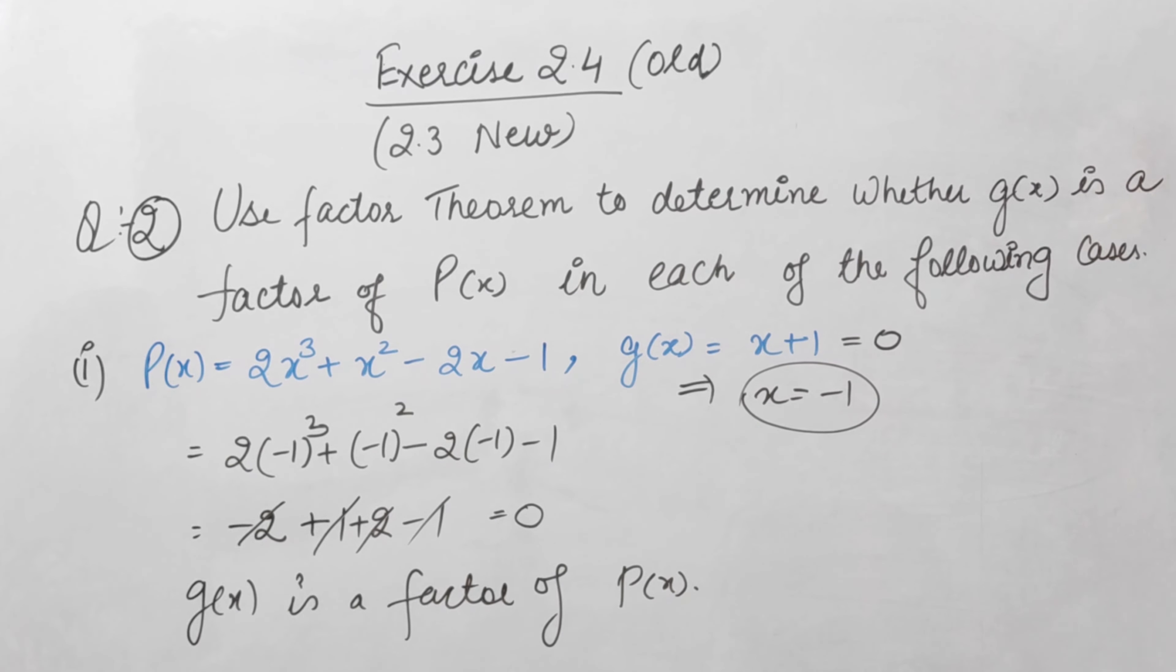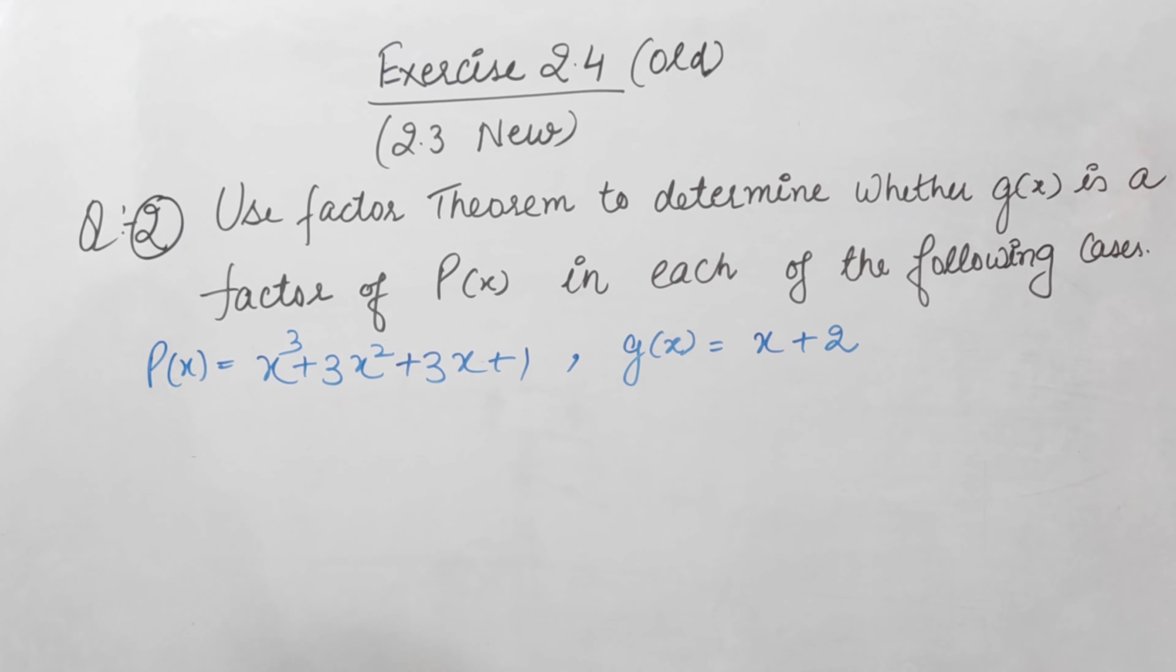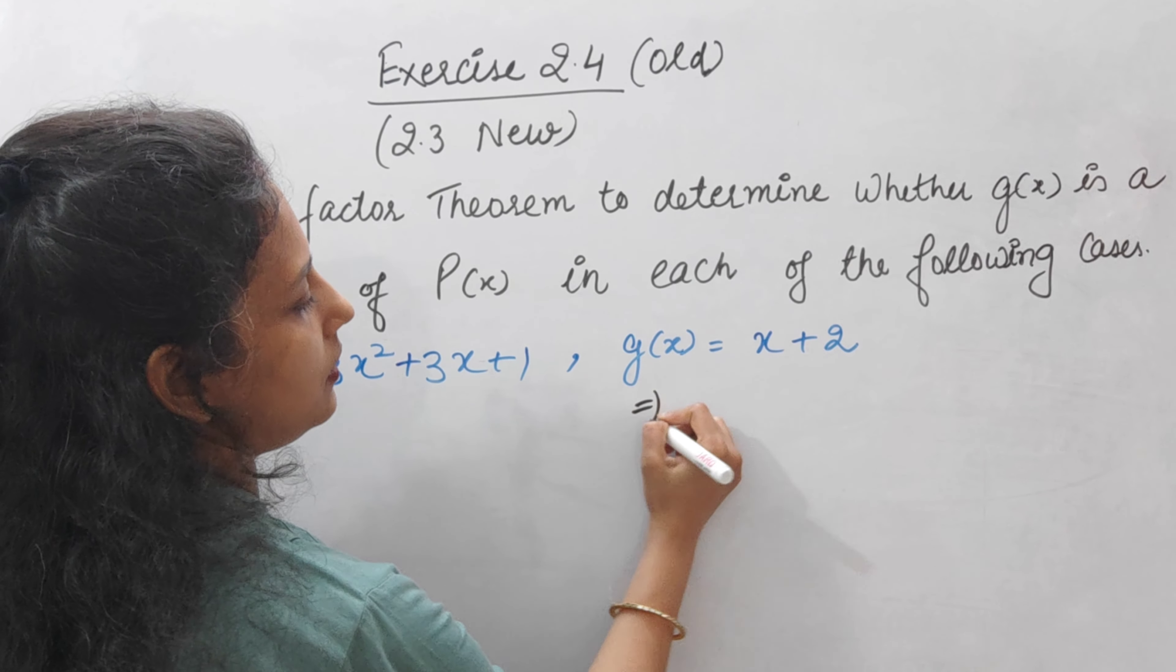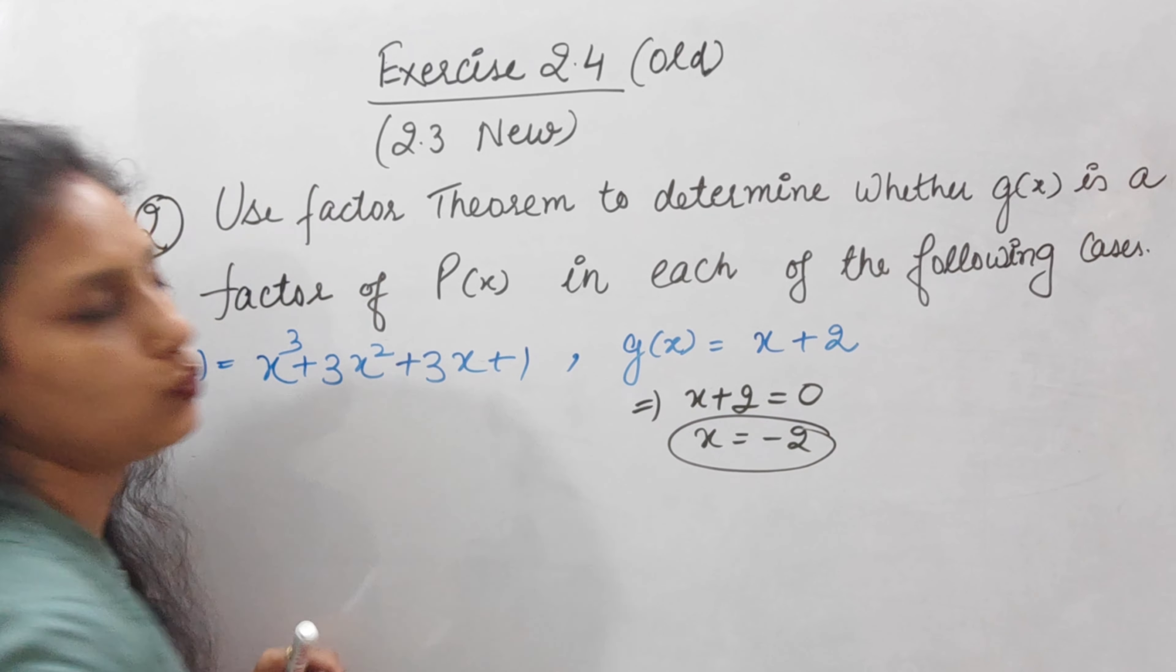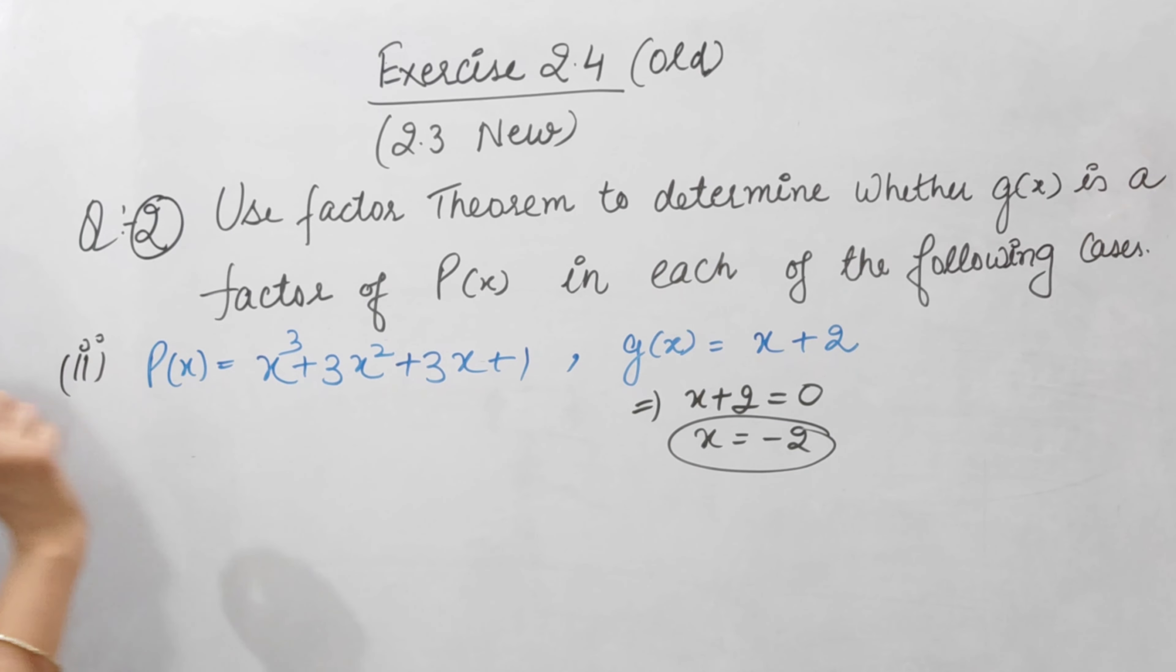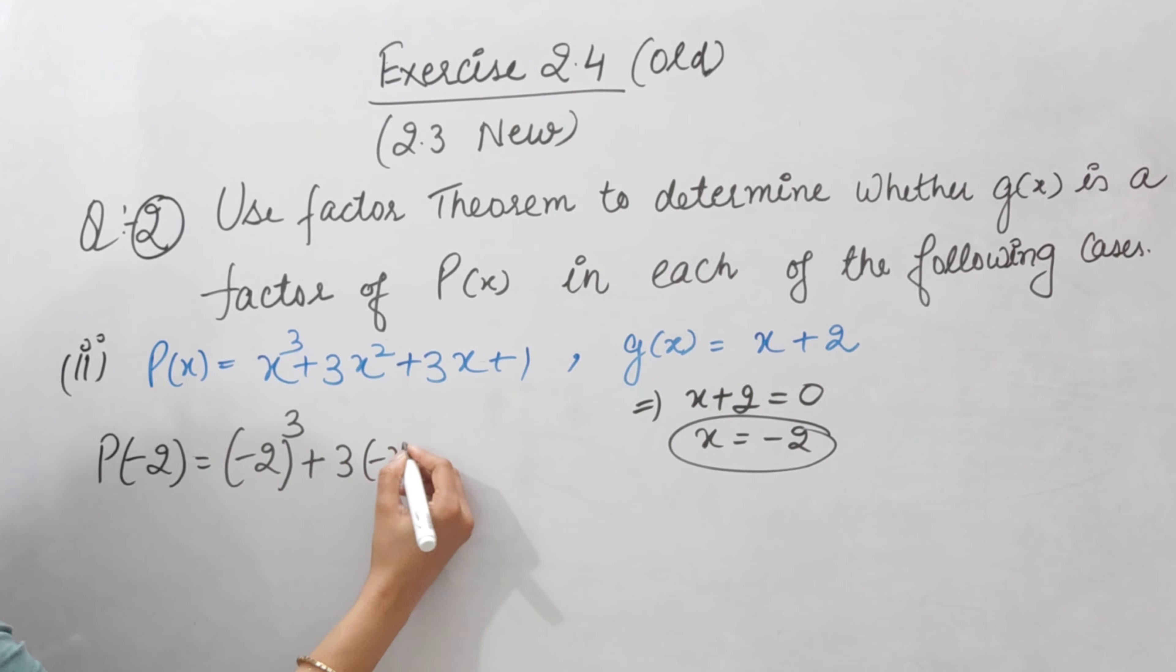Second part: P(x) is x cube plus 3x square plus 3x plus 1, and g(x) is x plus 2. So what will we do? g(x) will equal 0, so x plus 2 equals 0, which means x equals minus 2. Now, in P(x) we have to replace x with minus 2. So P(-2) equals minus 2 cube plus 3 times minus 2 square plus 3 times minus 2 plus 1.